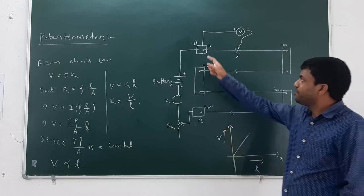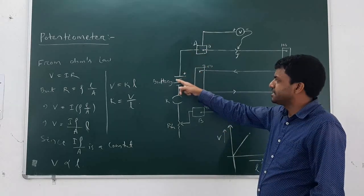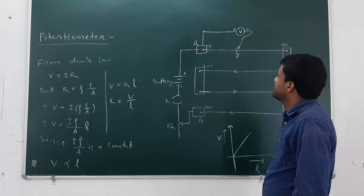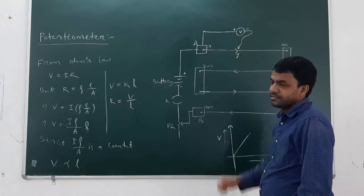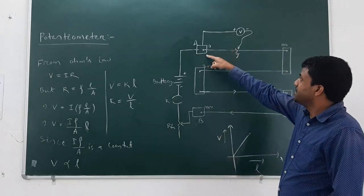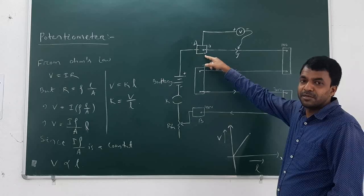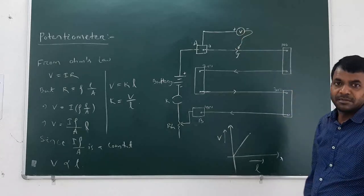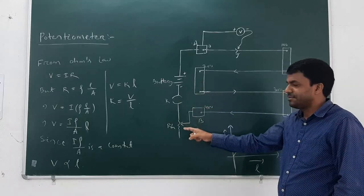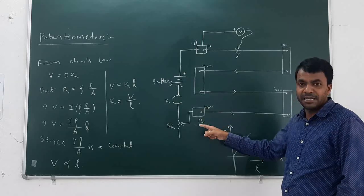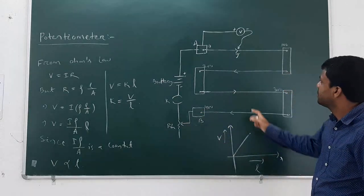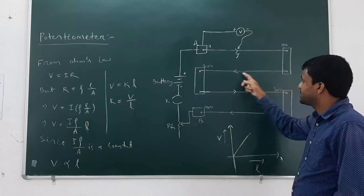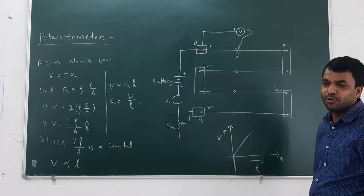This is point A, and point A is connected to the positive terminal of the battery — a combination of cells. There is a voltmeter connected between terminal A and the jockey. A is the initial point, the starting point, and the length of the wire is taken as 0 from here. Here is the battery, here is the key, here is the rheostat. The last terminal B is connected to this rheostat. The jockey will slide on this wire from A in one direction only.